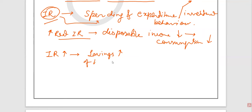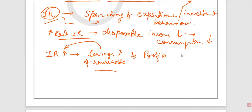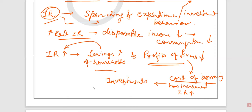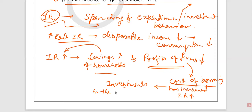Savings of households increase because they would feel that instead of spending their money they can invest, since interest rates are currently high in the market and they may get more gains. At the same time, when savings of households are increasing, the profits of firms are decreasing — because the cost of borrowing has increased due to high interest rates. And now that the cost of borrowing has increased, this would make investments in the economy less attractive.